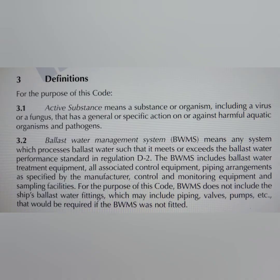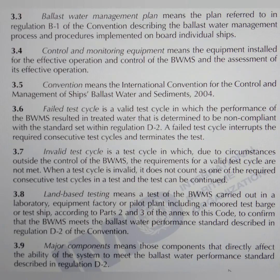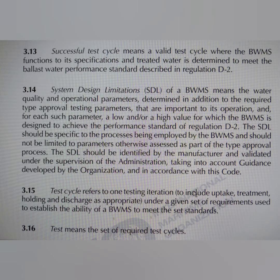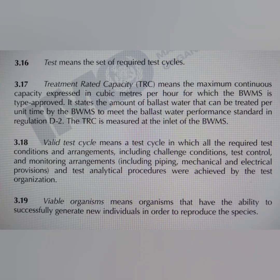Chapter 3 is definitions. In this chapter, the definitions of active substance, ballast water management system, ballast water management plan, control and monitoring equipment, convention, failed test cycle, invalid test cycle, land-based testing, major component, sampling facilities, representative sampling, shipboard testing — which means a full-scale test of a complete ballast water management system — successful test cycle, system design limitation, test cycle, treatment rated capacity, valid cycle test, and viable organisms are all given.